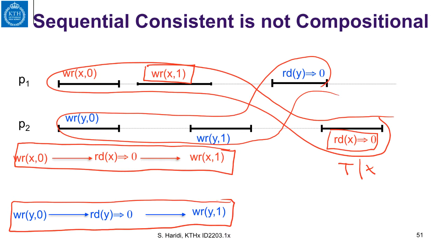This is an example where sequential consistency is not compositional. You have to take into account multiple registers when designing an algorithm for sequential consistency. In this lecture, we will strengthen sequential consistency a bit to get a compositional algorithm — we will see this when we go to an algorithm that implements a compositional form of sequential consistency.